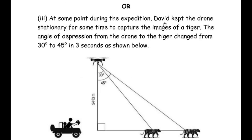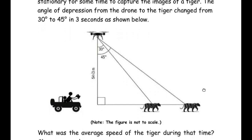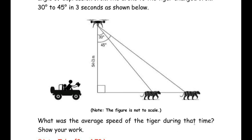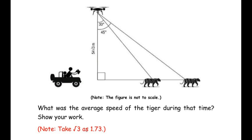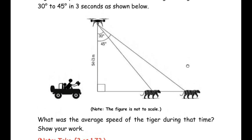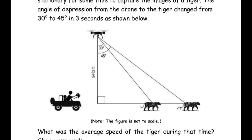Now let us look at the OR sub-question. At some point during the expedition, David kept the drone stationary to capture images of a tiger. The angle of depression from the drone to the tiger changed from 30 degrees to 45 degrees in 3 seconds, as shown. What was the average speed of the tiger during that time? Show your work. Take √3 = 1.73. We need to find the average speed of the tiger in 3 seconds as it moved from one position to the other.